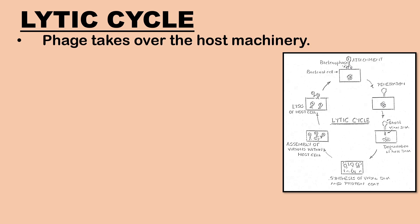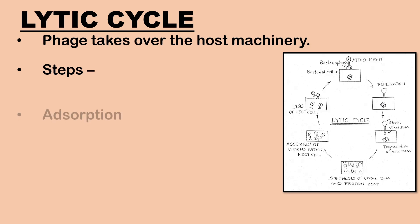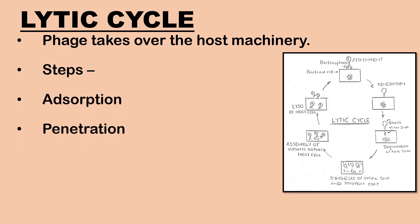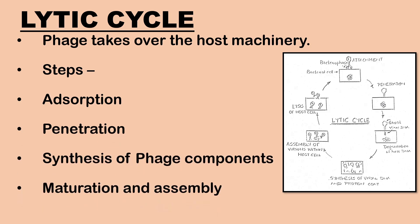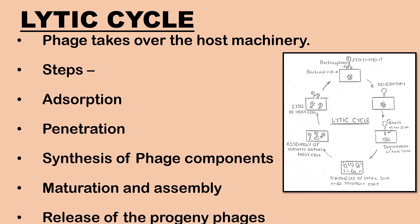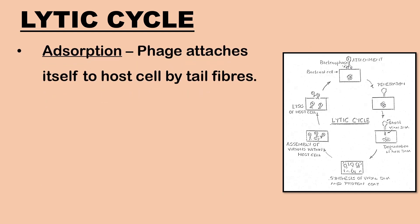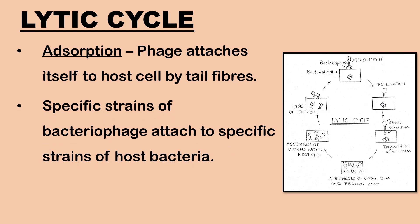In the lytic cycle, the phage takes over the machinery of the host cell to make the phage components and produce its viral progeny, killing the host in the process. The steps involved are: adsorption, penetration, synthesis of phage components, maturation and assembly, and release of the progeny phages. In the first stage, adsorption, the phage particles come in contact with the bacterial cell. Attachment sites on the bacteriophage attach to the receptor sites on the host bacterium cell membrane by means of tail fibers. Specific strains of bacteriophage only attach to specific strains of host bacteria.